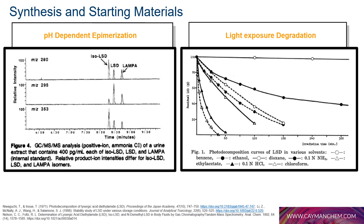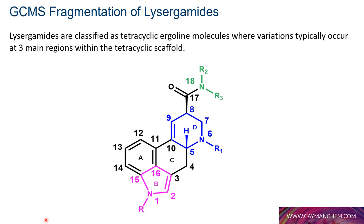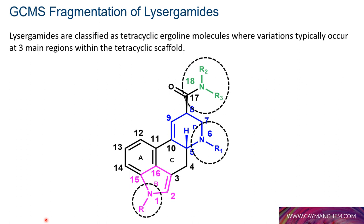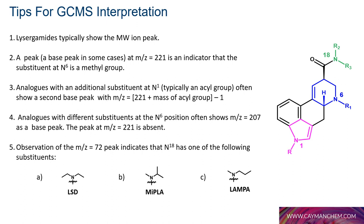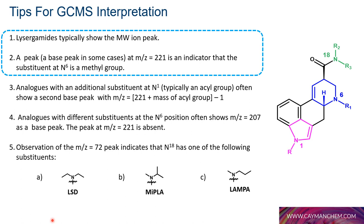Now we discuss fragmentation of lysergamides, focusing on modifications at the amide region (N18), N6 of the piperidine ring, and N1 of the indole. We'll discuss similarities and differences between analogs and how to use this information to decipher unknown identities in casework. Based on GC-MS data analysis, a list of interpretation tips has been created. Tip 1: lysergamides typically show the molecular ion peak. Tip 2: observation of a peak at m/z 221 indicates a methyl group at N6.